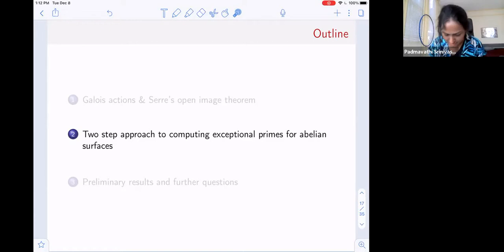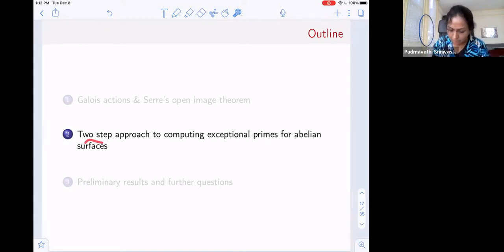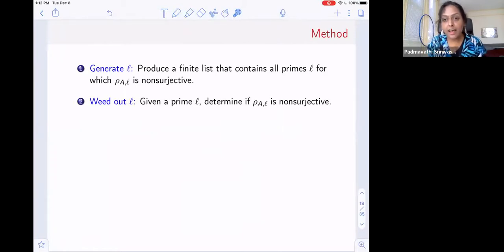Now that I've told you what our goal is, let me jump on and tell you what we actually do to compute these exceptional primes associated to Galois representations of abelian surfaces. Our method has two steps. The first step, we first find a finite list of primes that contains all the primes where rho_A,L is possibly non-surjective. This list might be a little too big. It might have a few false positives. So our second step is to take this list and for each prime in this list, check whether rho_A,L is actually surjective or non-surjective. Two steps: generate all L, weed out all the fake or false positives.